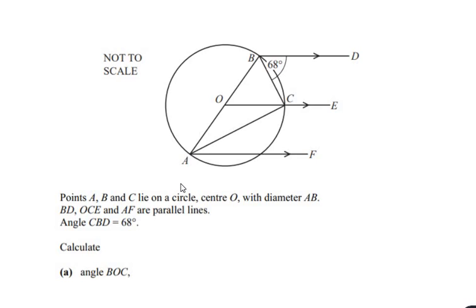Hello and welcome to my channel. In this video we are going to solve an example on circle theorems. Points A, B and C lie on a circle, and the center of the circle is at point O, with diameter AB — so the line AB is passing through the center of the circle and acting as a diameter. Lines BD, OCE and AF are parallel lines.